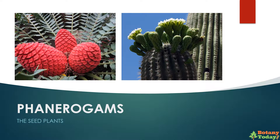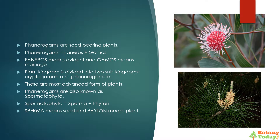Let's learn about Phanerogams today. Phanerogams are seed-bearing plants. The word Phanerogams is made up of two words: Phaneros and Gamos, where Phaneros means evident and Gamos means marriage. Plant Kingdom is divided into two sub-kingdoms: Cryptogami and Phanerogami. Phanerogami are the most advanced form of plants, also known as Spermatophyta. The word Spermatophyta is made up of Sperma meaning seed and Phyton meaning plant.